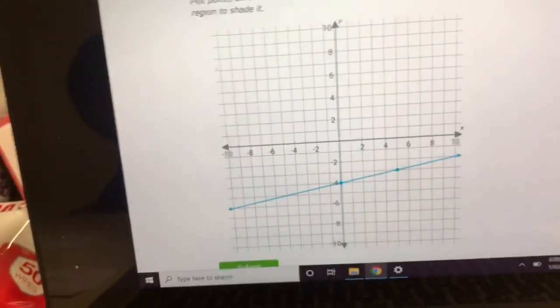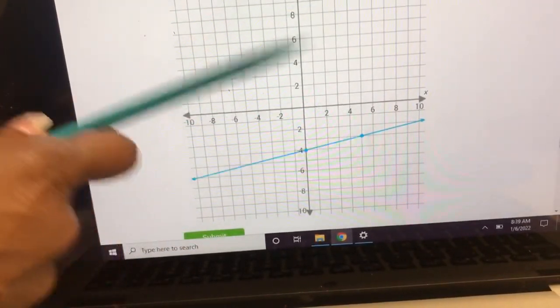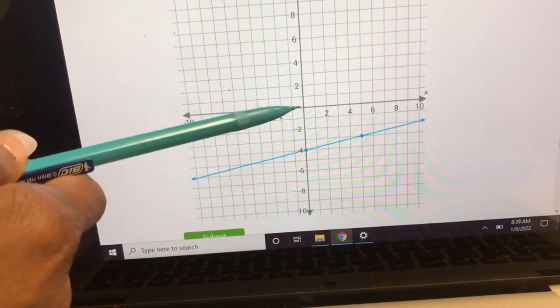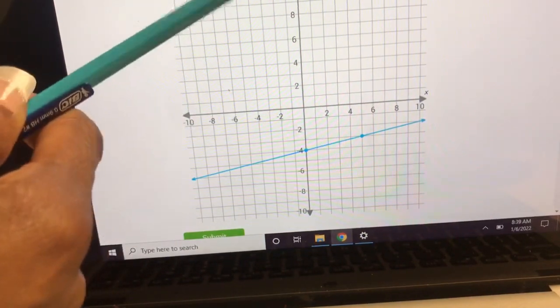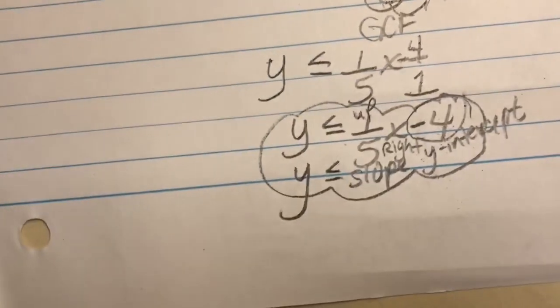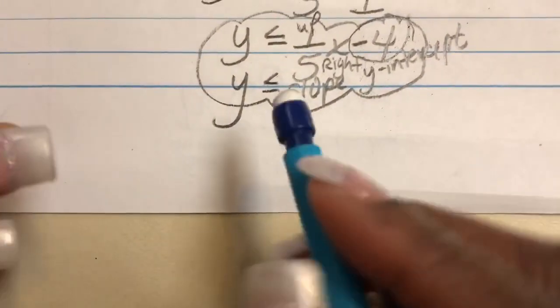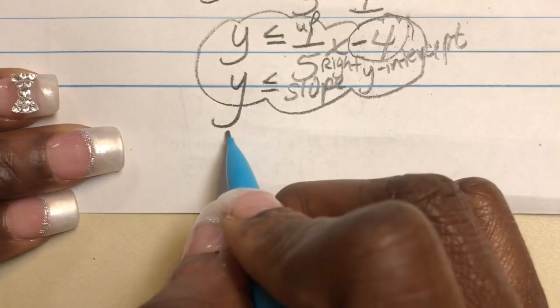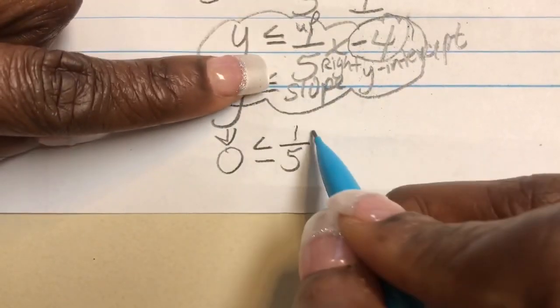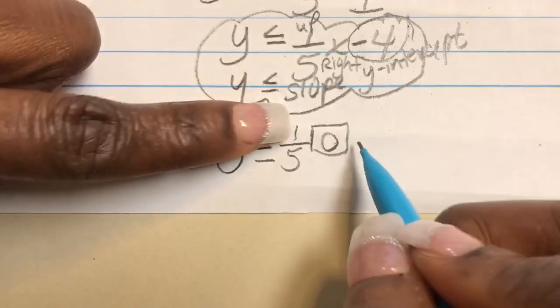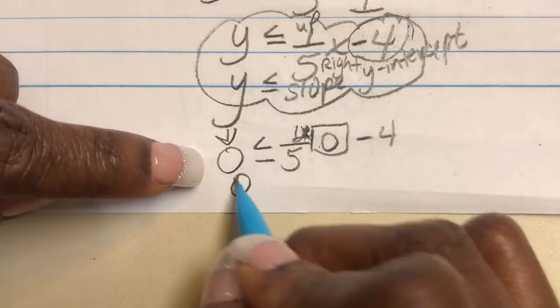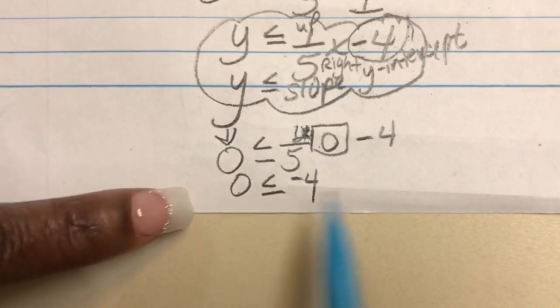So I already have it as a solid line. My last step is to check and see do I shade in this side of the line or do I shade in this side of the line. I'm going to try 0, 0 and see if this point makes the inequality true. If it does, I will shade here. If it doesn't, I will shade on this side. So let's go back to our inequality and let's try to substitute the X with 0 and the Y with 0. So here for Y, I'm going to put a 0. Excuse me, I have 1, 5. For the X, I'm going to put a 0 minus 4. Anything times 0 is just 0. So actually we have 0 less than or equal to negative 4. And we see if this inequality is true.